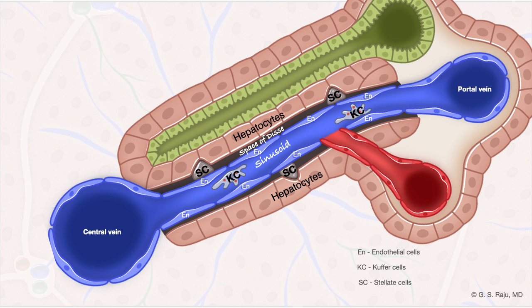So we have talked about the portal vein, sinusoid, central vein, hepatocytes, space of Disse, Kupffer cells in the sinusoid, and stellate cells in the space of Disse. Also in the portal triad is the hepatic artery branch, which also drains into the sinusoid. The bile secreted by the hepatocytes is received by the hepatic duct via the canaliculus.